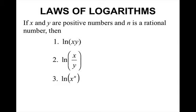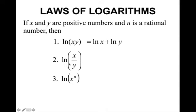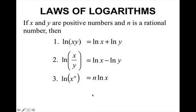First, we need to review some of our laws of logarithms. So if x and y are positive numbers and n is a rational number, then the natural log of x times y is the same thing as the natural log of x plus the natural log of y. The natural log of x over y is the same as the natural log of x minus the natural log of y. And the natural log of x to the nth power is the same as n times the natural log of x. I hope you remember these from pre-calculus and math analysis.